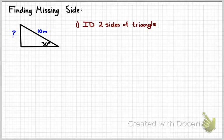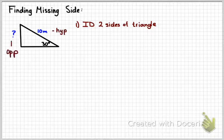The first thing that you need to do, and this may be difficult sometimes, is identify the two sides of the triangle you're dealing with. Here I've got the hypotenuse. I'm being asked to find the opposite side.